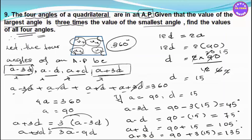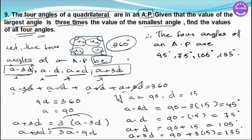Therefore, the four angles of the quadrilateral are 45 degrees, 75 degrees, 105 degrees, and 135 degrees.